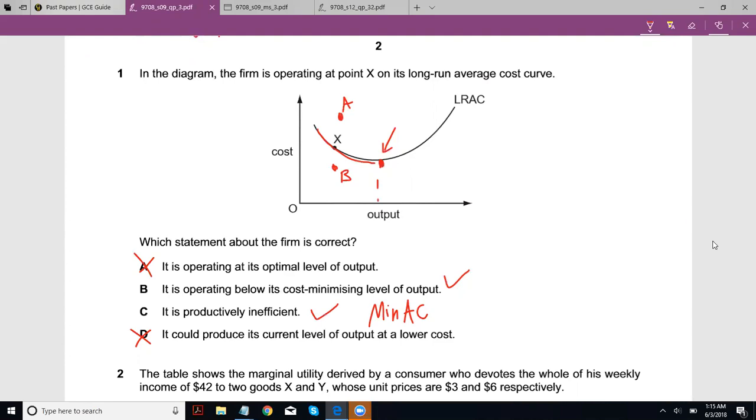The issue here and the reason why B is right is fine because obviously it's not producing at its cost minimizing level of output. That would be output this point here.